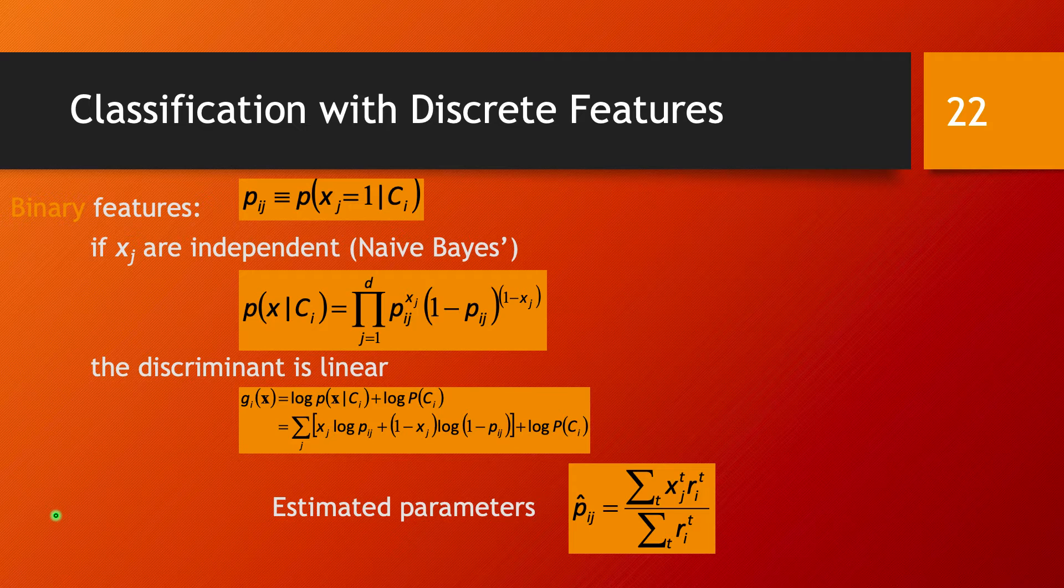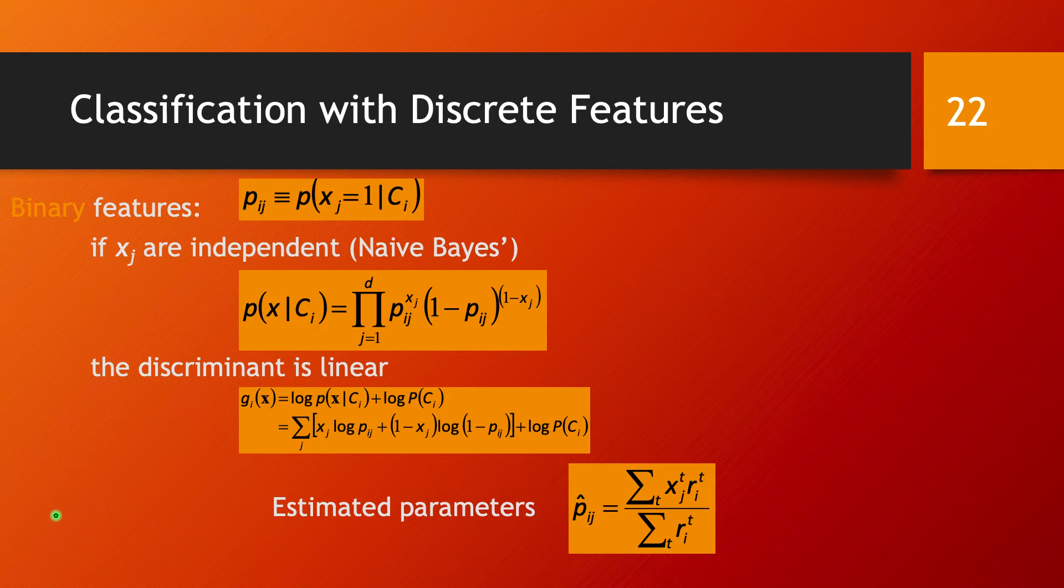In this case, we need a different representation because assumptions about normal distributions and other things we've done for continuous features cannot be applied.